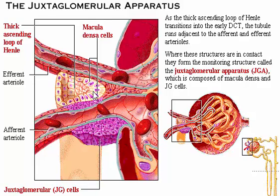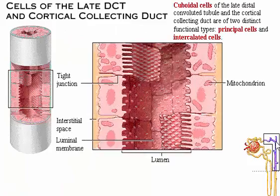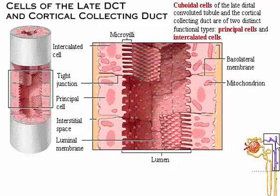The cuboidal cells of the late distal convoluted tubule and the cortical collecting duct fall into two distinct structural and functional types: principal cells and intercalated cells. The more numerous principal cells have few microvilli and basolateral folds. These specialized cells respond to certain hormones that regulate the cells' permeability to water and solutes, specifically sodium and potassium ions. When the acidity of the body increases, the intercalated cells secrete hydrogen ions into the urine to restore the acid-base balance. The key feature of principal cells is hormonally regulated permeability; the key feature of intercalated cells is their secretion of hydrogen ions for acid-base balancing.